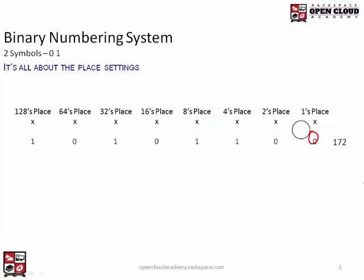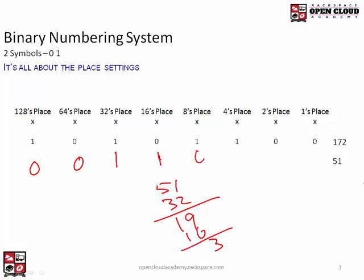Let's do 51. We know 128 and 64 are too big, so we start at 32. 51 minus 32 equals 19. Then we can take 16 — 19 minus 16 is 3. So that's going to be 0011 at the end. This was an odd number, so the 1's place has to be set to a 1. And we're right — it checks out.